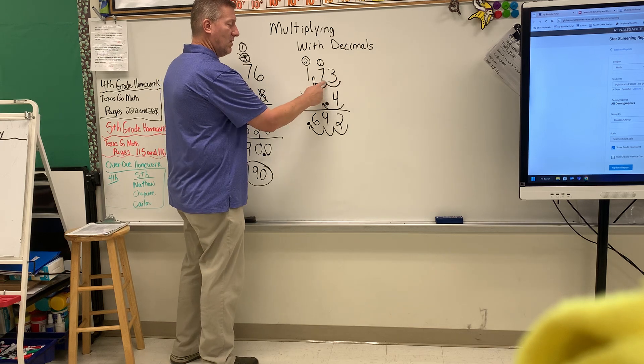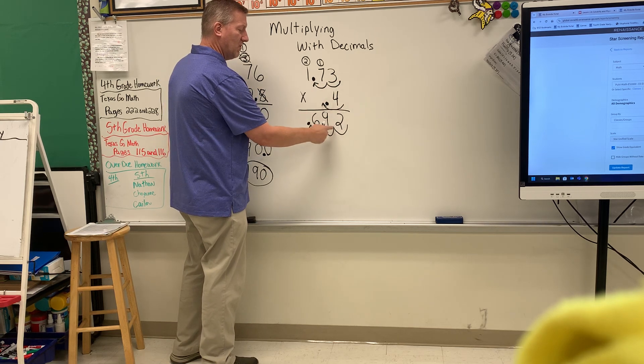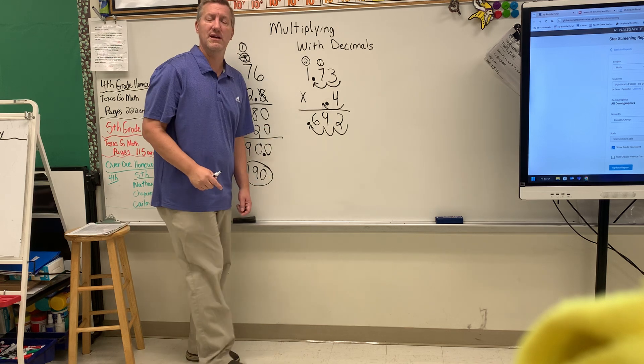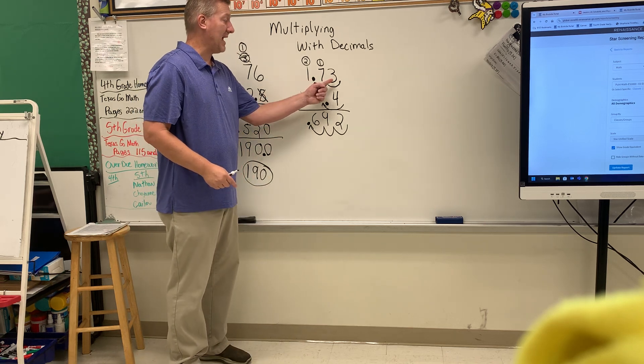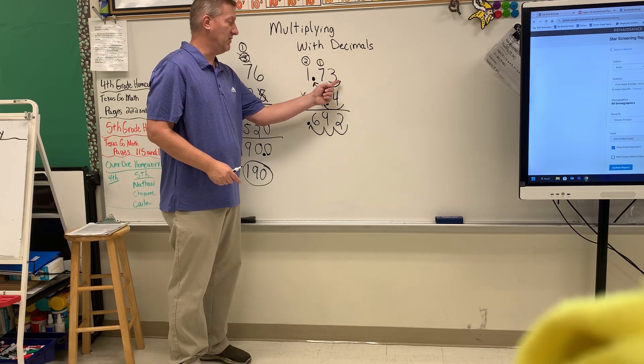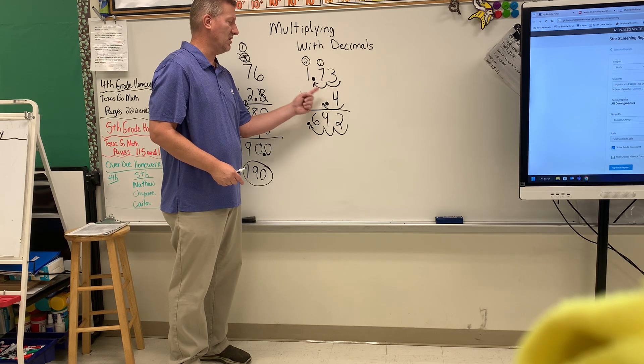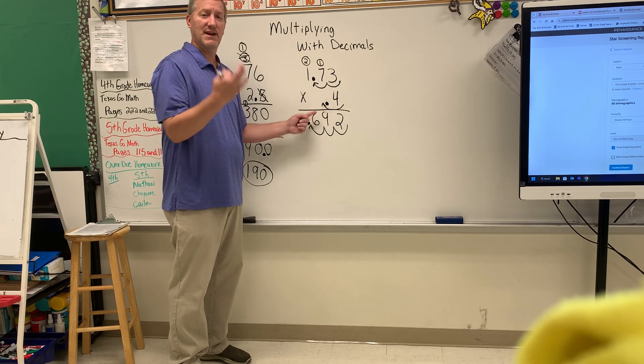1, 2 up here. 1 up here. 1, 2, 3. So you have to add up the number of times you move the decimal. 1, 2 here. 1, 2 here. 1 here. That's a total of 3.